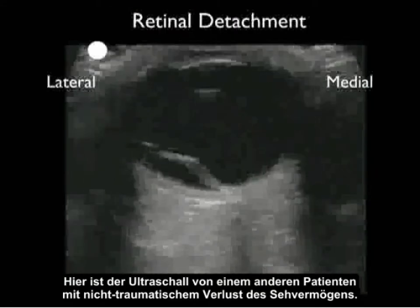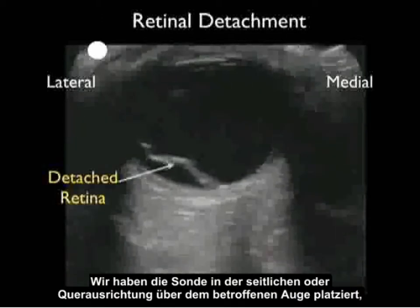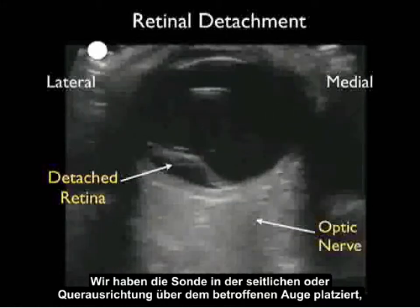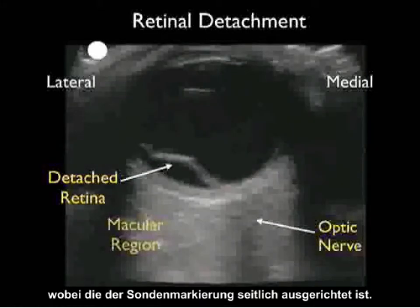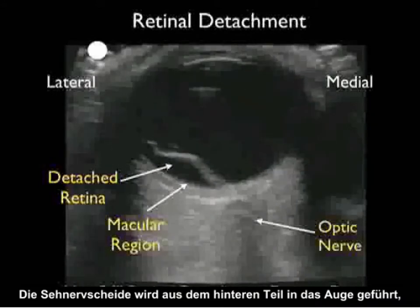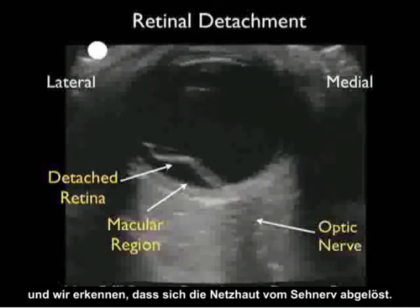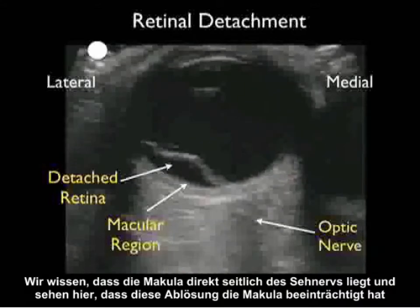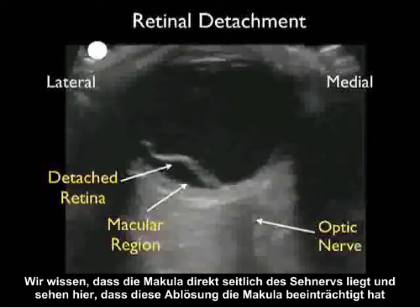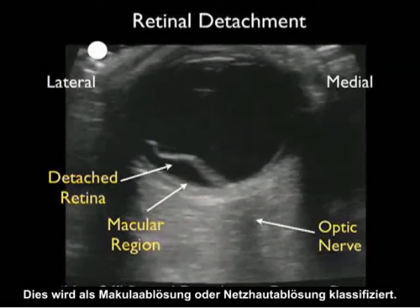Here's the ultrasound from another patient who presented with non-traumatic loss of vision, and again we note the classic appearance of a retinal detachment. The probe is configured in a transverse orientation over the patient's eye with the probe marker oriented lateral. We can see the optic nerve sheath coming up from the posterior aspect into the eye, and the detached retina emanating off from the optic nerve. Recalling that the macula lies just lateral to the optic nerve, this detachment has affected the macula — classified as a mac-off or macular-off retinal detachment.